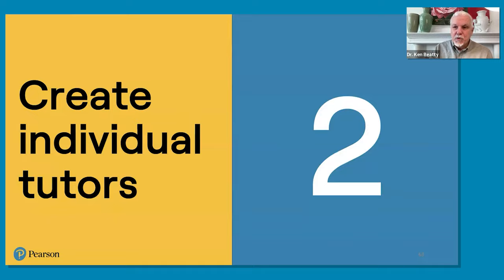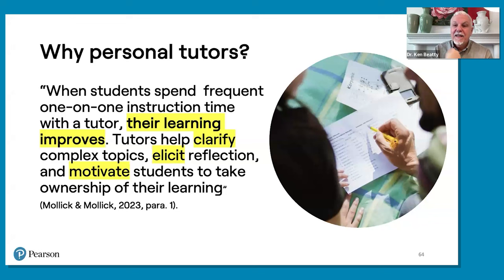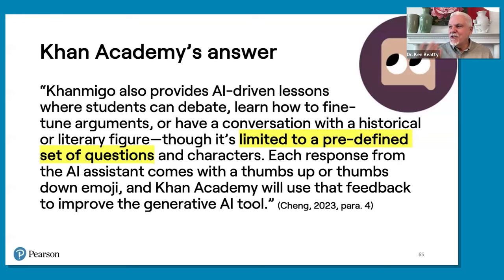Tip 2 is to create individual tutors for students. When students spend frequent one-on-one instruction time with a tutor, their learning improves. We know tutors help clarify complex topics, elicit reflection, and motivate students to take ownership of their learning. Can AI do that as well? I think it's possible — by asking the right questions, you could get AI to start being a tutor. Some groups have already tried this independently. The Khan Academy created something called Khanmigo — it sounds like 'amigo,' the Spanish word for friend. But it's limited to a predefined set of questions, so it's not very flexible or open-ended — that's basically to control the types of questions asked and the feedback it will give.